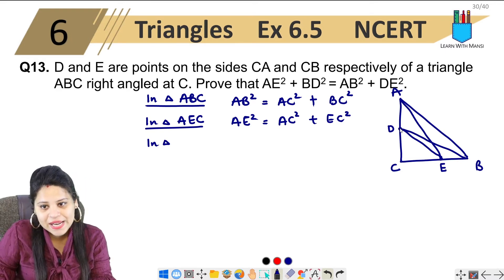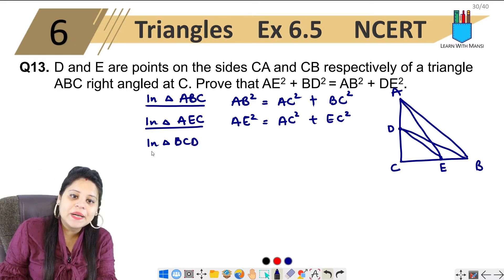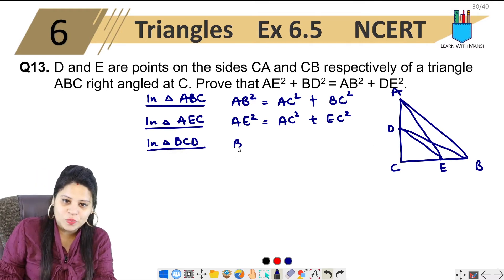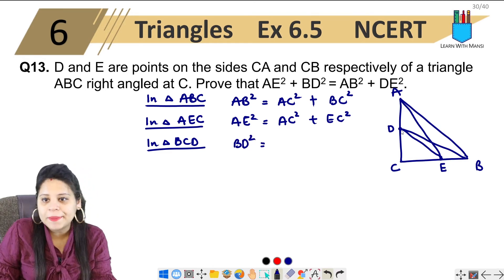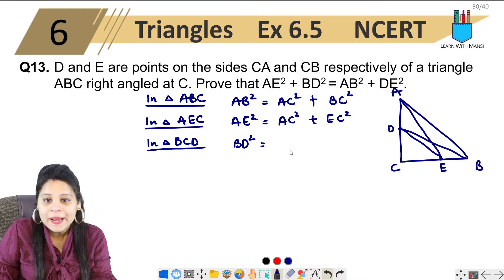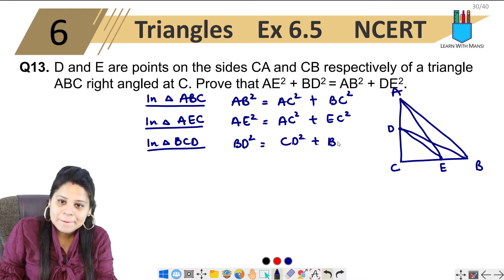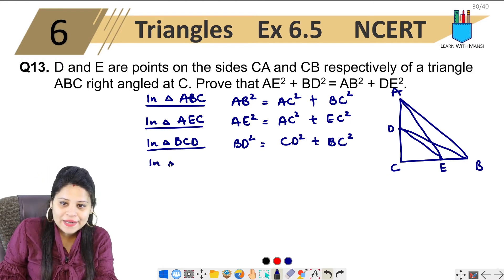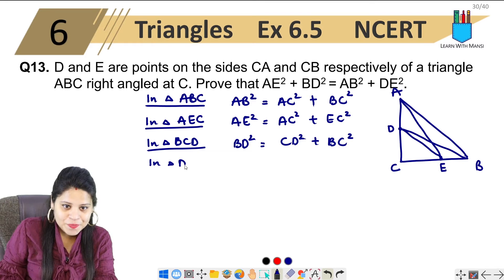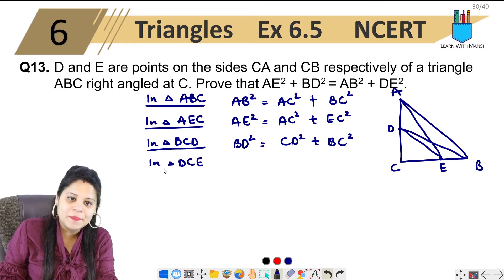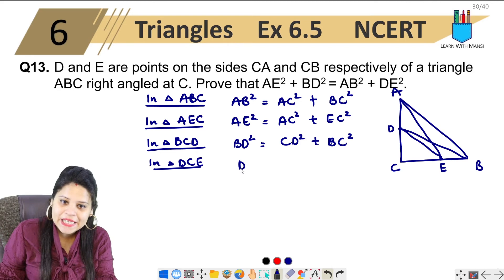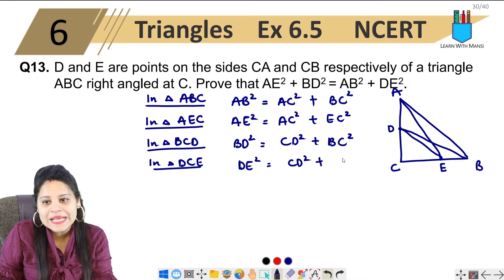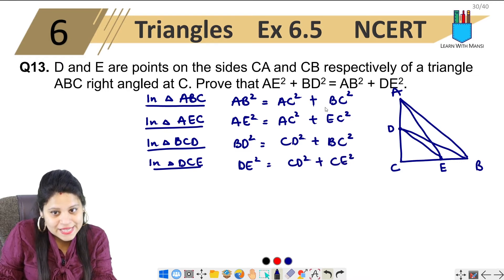We add the third triangle. So in triangle BCD, if we talk about BCD, again hypotenuse is BD. So BD square equals to the two sides CD and BC. So CD square plus BC square. Okay, let's call this one, two, three. Now we have a question. So in triangle DCE, if we talk about DCE, then hypotenuse is DE. So DE square equals to CD square plus CE square.